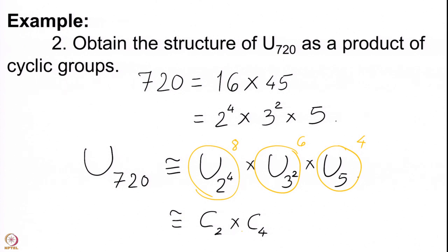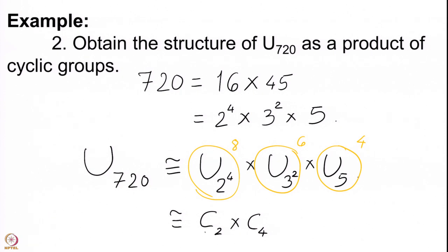For U(16), knowing it has cardinality 8 and must be a product of C₂ with another cyclic group, it must be C₂ × C₄. U(9) and U(5) involve odd prime powers so they are already cyclic. So the complete description is U(720) ≅ C₂ × C₄ × C₆ × C₄, and we have now understood all U(n) modulo some basic results in group theory.